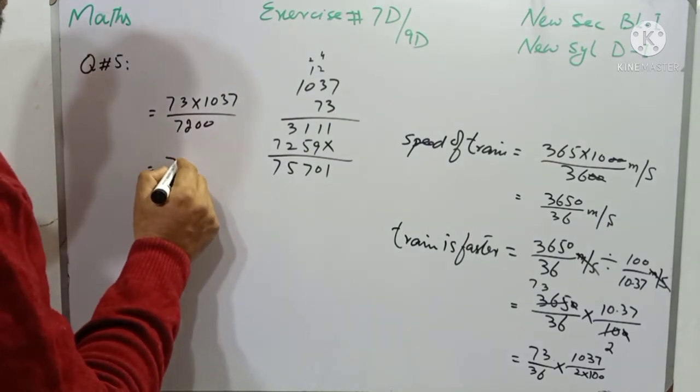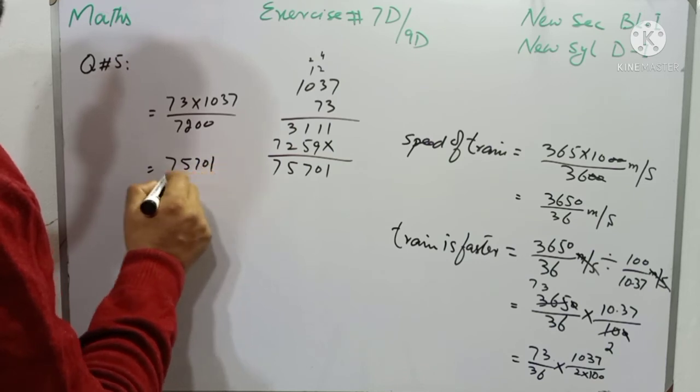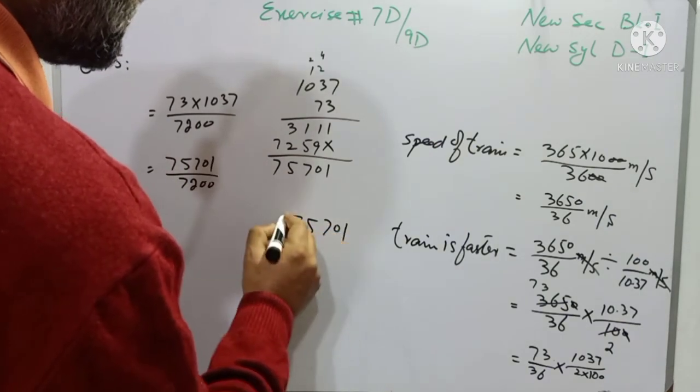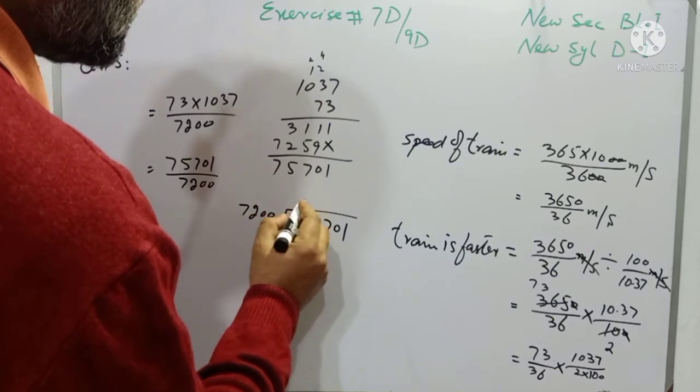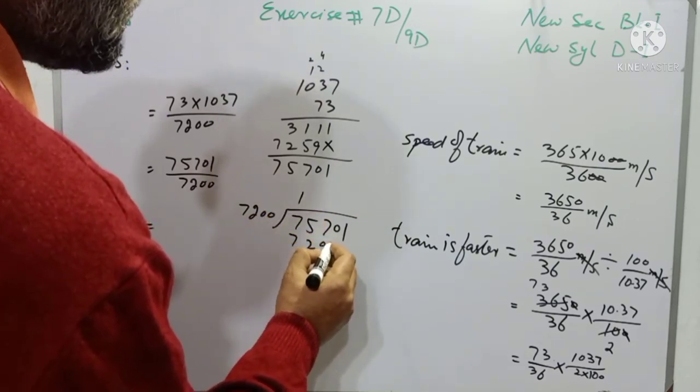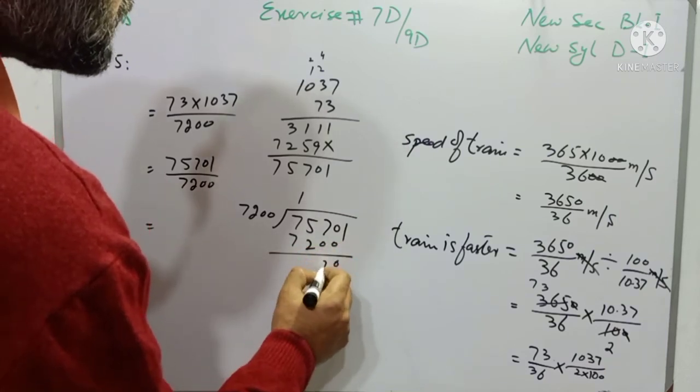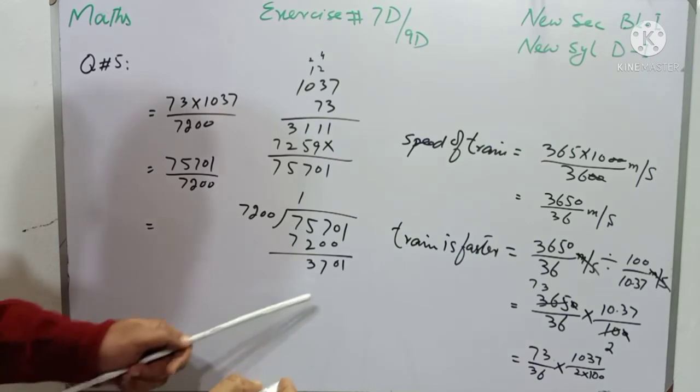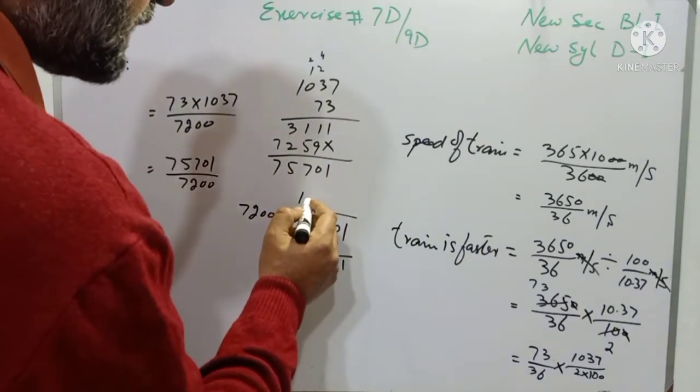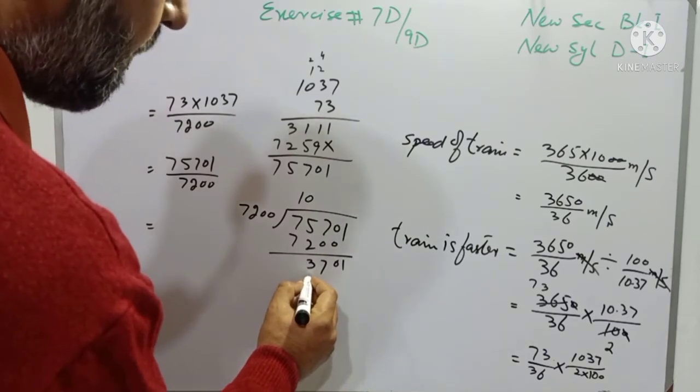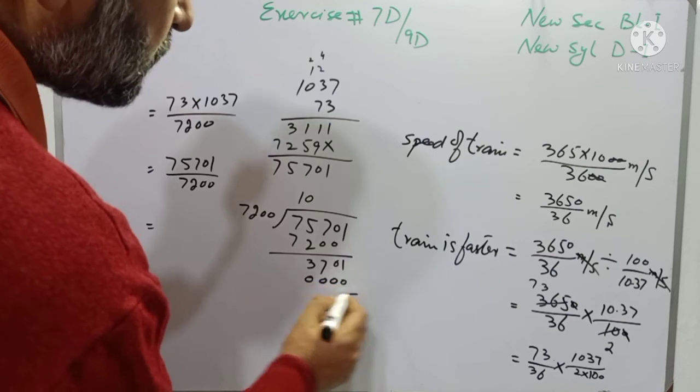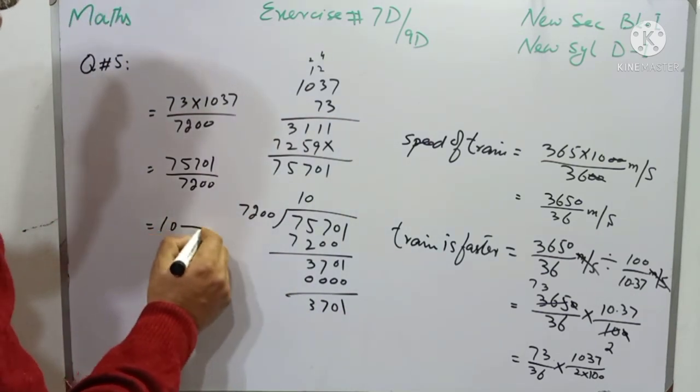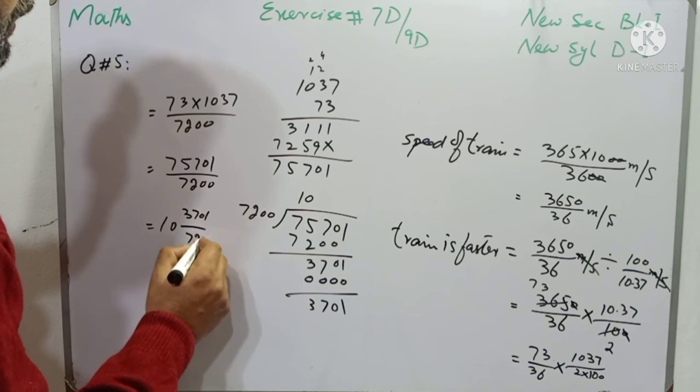Now students, 75,701 will be divided with 7200. And it is 7 1's are 7, 7200, 0, 7 and 3. And then we will draw the next digit, and it is less than 7200, so I will write here 0. And it is 70, 0, 0, 0 and 0. And the remaining one is 1073. So the answer is 10 whole number, 3, 7, 0, 1 over 7200 times. The train is faster than the player.